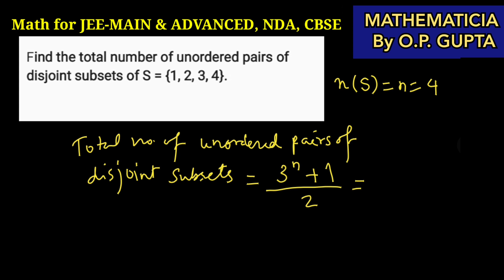For set S we have n equals 4, so we will put n as 4 in this formula and do the calculations. 3 to the power 4 is 81.